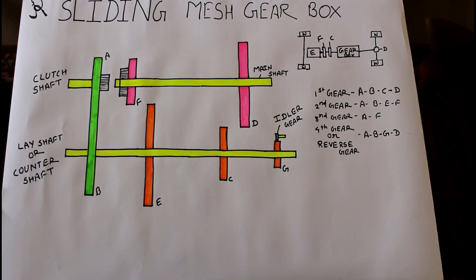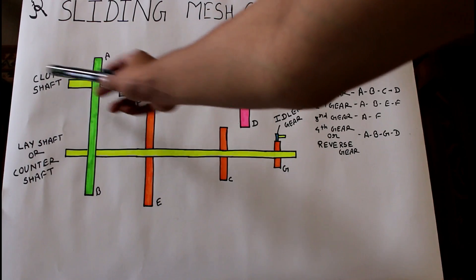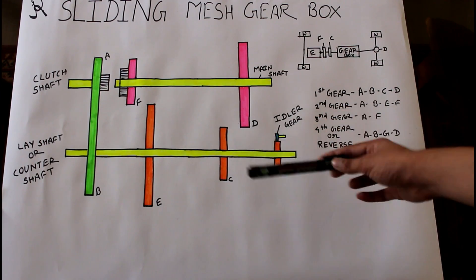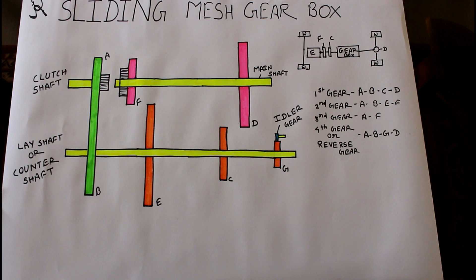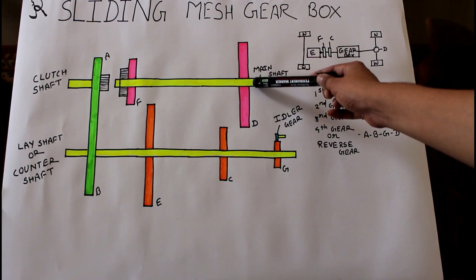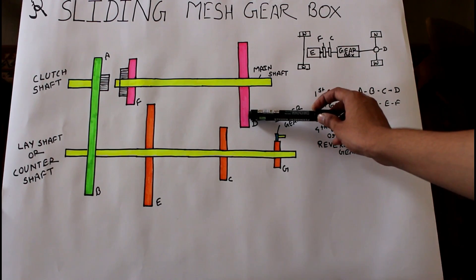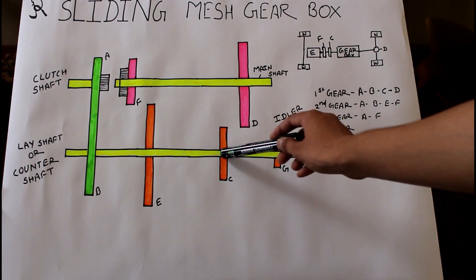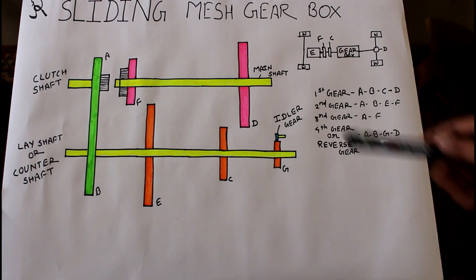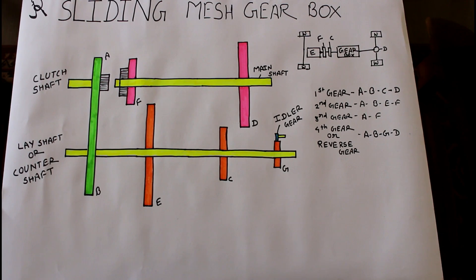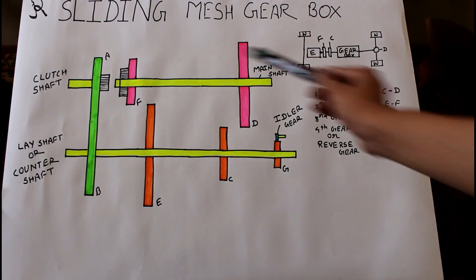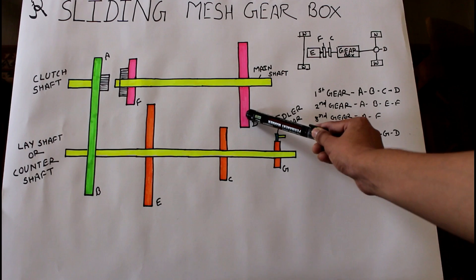If we want to move forward, we select the first gear. Power comes from the clutch shaft to the clutch gear A, then transmitted to the countershaft via gear B — the countershaft is continuously rotating. For first gear selection, gear D on the main shaft is moved forward using the selector mechanism and meshes with gear C. After meshing of gears C and D, first gear is engaged and the vehicle moves forward. First gear is also called the load gear. Power path: A → B → C → D.